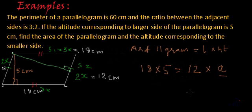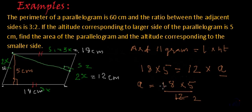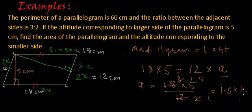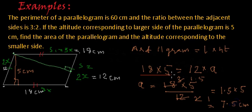Rearranging the terms, we get A equals 18 multiplied by 5 divided by 12. Simplifying: 18 divided by 12 gives 1.5, and 1.5 multiplied by 5 equals 7.5. So the altitude corresponding to the smaller side is 7.5 centimeters. The area is 18 multiplied by 5, which equals 90 centimeters squared.